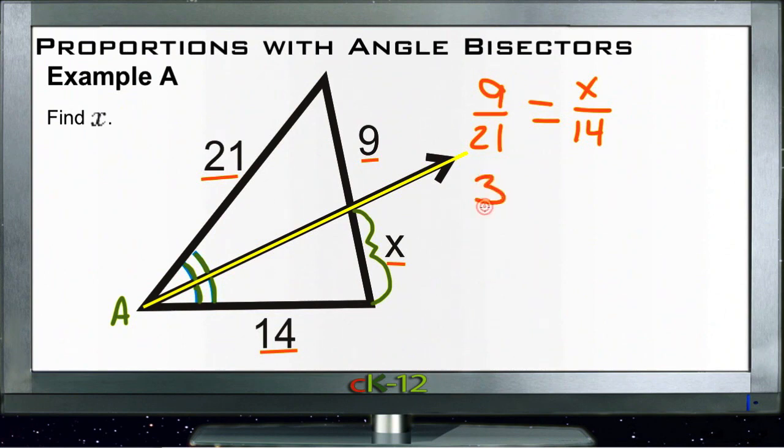So 9 divided by 3 is 3, 21 divided by 3 is 7, so we got 3 sevenths compares to x over 14. Well that's nifty because I know that 7 times 2 is 14. X must be 3 times 2 which would be 6. That saves me some math, so x equals 6. Just like that.